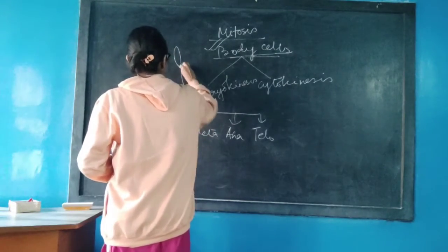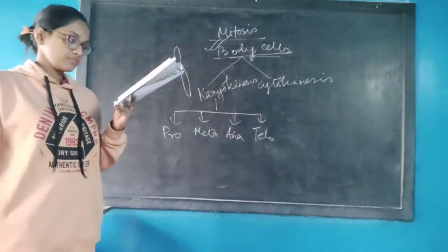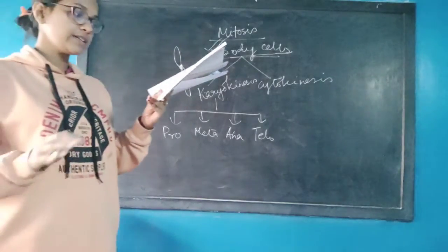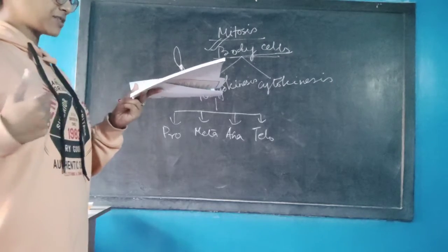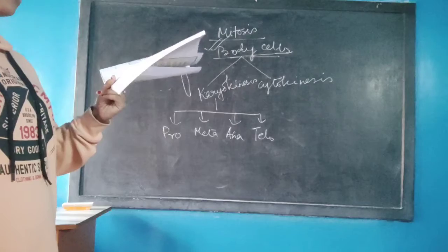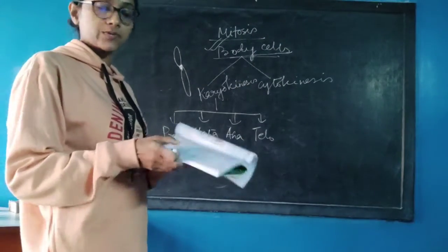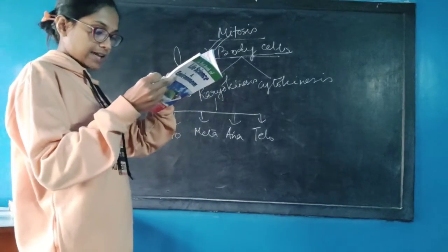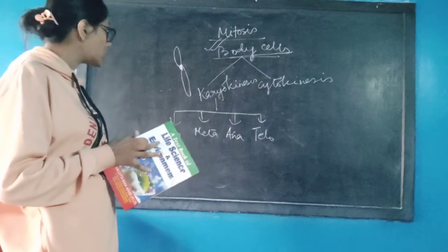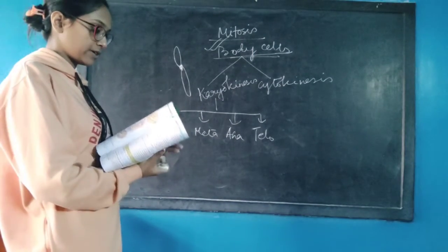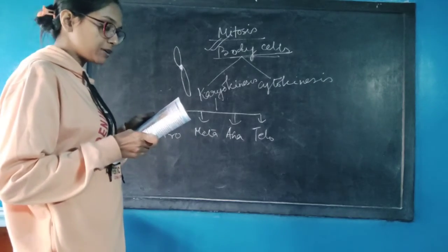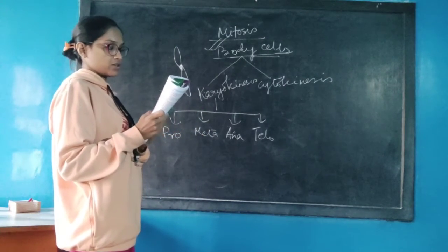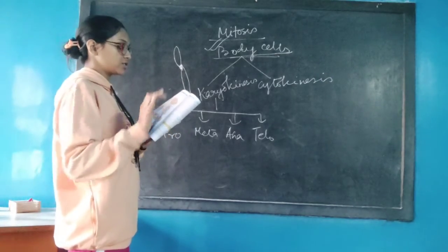Each chromosome consists of two chromatids — the two arms — which are held together by the centromere. During early prophase, the chromosomes are equally distributed in the nucleoplasm, but as the process progresses the chromosomes migrate towards the nuclear membrane. In animal cells, the centrioles duplicate and move towards opposite poles to form the spindle fiber. The movement of centrioles occurs due to pushing apart by growth of the spindle fibers between them.